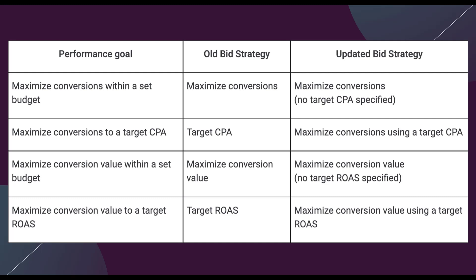Same thing with Target ROAS. If you don't have a target return on ad spend specified, you'll still use Maximize Conversion Value. But if you do have a specific benchmark you want to hit, your old campaign strategy would have been Target ROAS — now it's going to be Maximize Conversion Value using a Target ROAS goal.